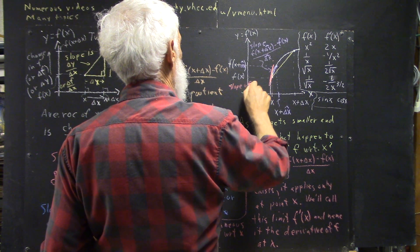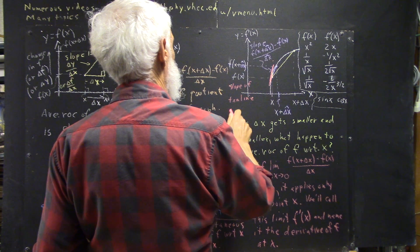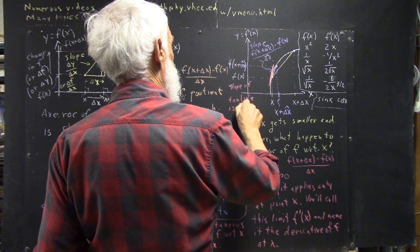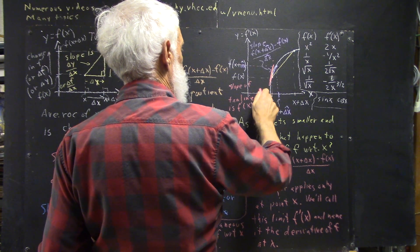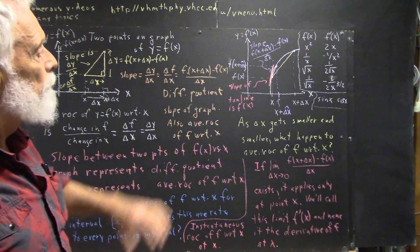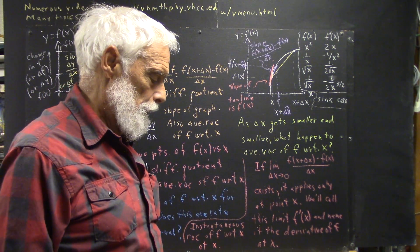So, we're going to say the slope of the tangent line is f prime of x. And that should be fairly easy to understand. Now, we'll develop that topic a little more.